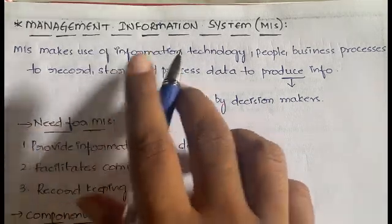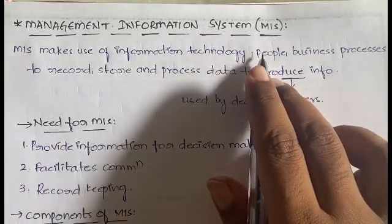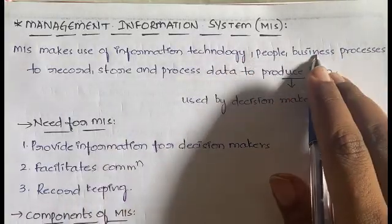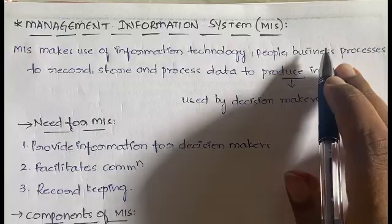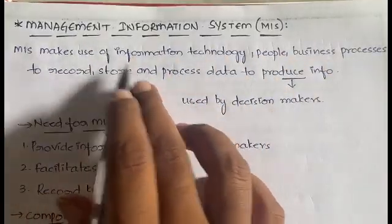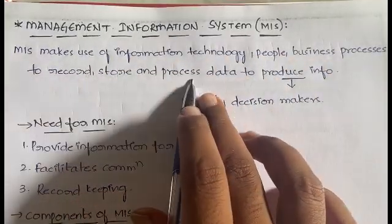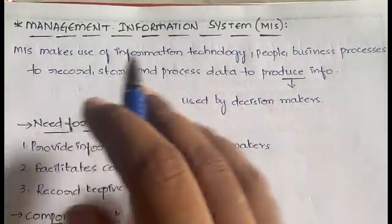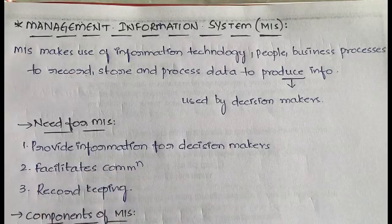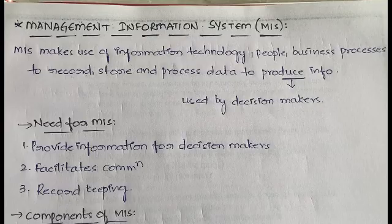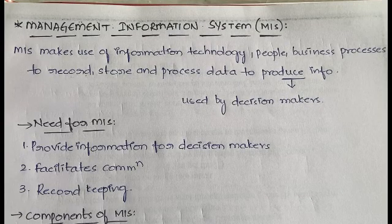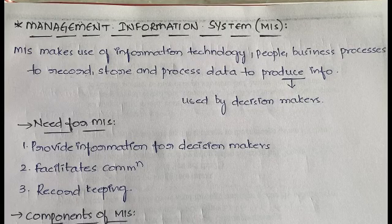MIS makes use of information technology, the people in the organization, and the business processes that the organization is following, in order to record and store data related to the organization. It does some analytics and produces information, which is then used by decision makers to take important decisions related to the organization.